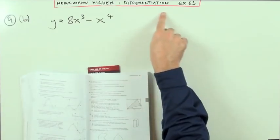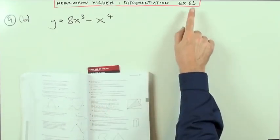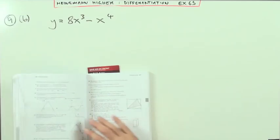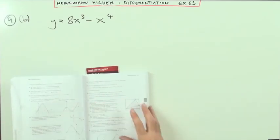Heinemann Higher, Chapter 6, Differentiation, mixed exercises at the end, Exercise 65, the second part of 9. Because the first part was a little bit long, but this one is going to be simpler. That first part was a bit nasty.